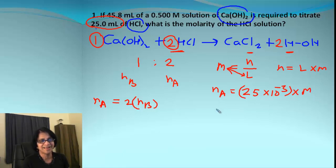n_B will be the volume, which is 45.8, and to convert that into liters it's multiplied by 10^-3, and molarity is 0.500. Once we get the number of moles for acid and base, it's simply plugging the values in.